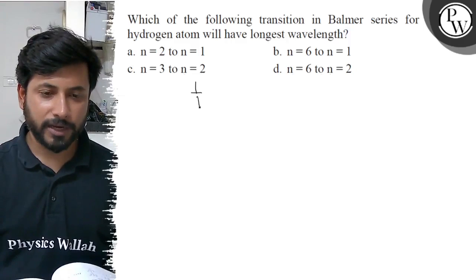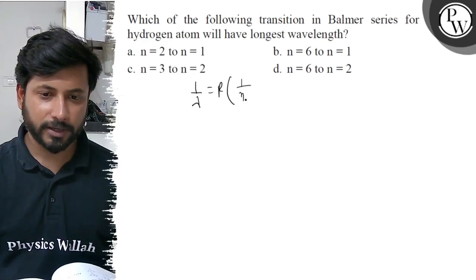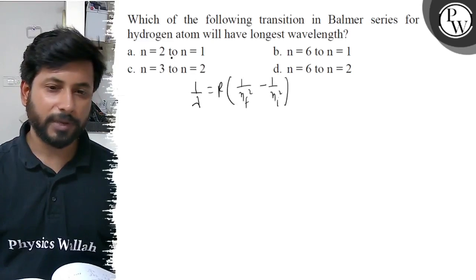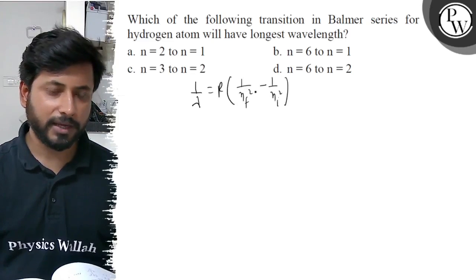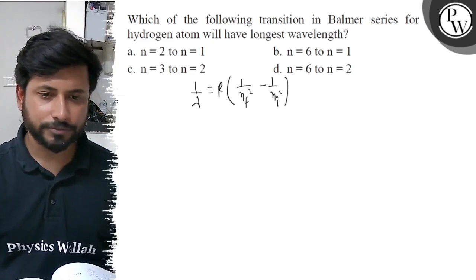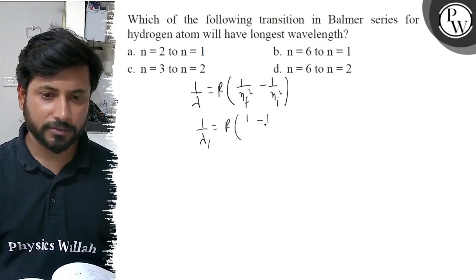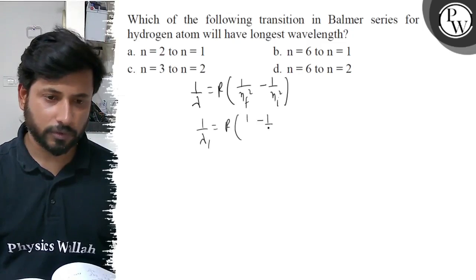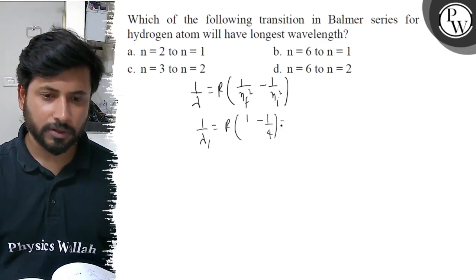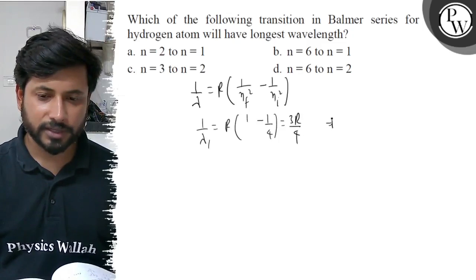For the longest wavelength, we use the formula: 1/λ = R × (1/n_final² − 1/n_initial²). So first, for Option A (n = 2 to 1): 1/λ₁ = R × (1 − 1/4) = 3R/4. Therefore λ₁ = 4/(3R).